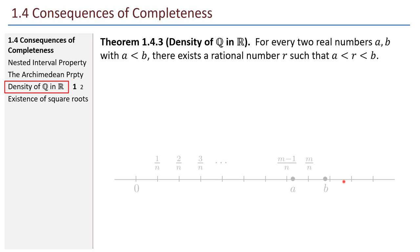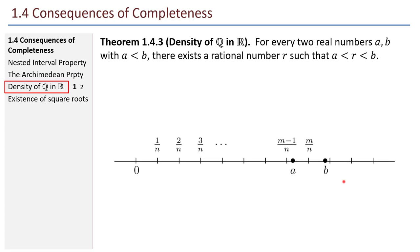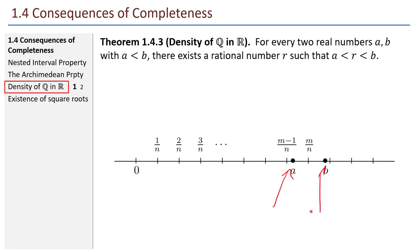Our third great property is the density of the rationals in the reals. For every two real numbers A and B with A < B, there exists a rational number R strictly between A and B — that's what it means for the rationals to be dense in the reals.